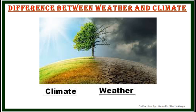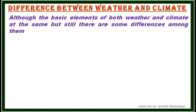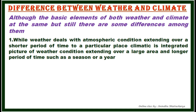Although the basic elements of both weather and climate are the same, there are some differences between them. While weather deals with atmospheric conditions extending over a shorter period of time, climate gives an integrated picture of weather conditions extending over a longer period of time, such as a season or a year. If you are talking about a small period of time it is weather, but a whole year or a few seasons — two or three months — that would be climate.